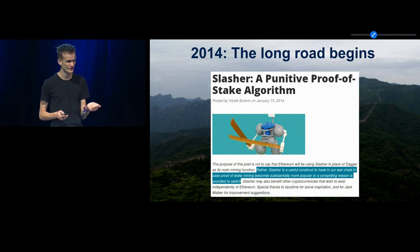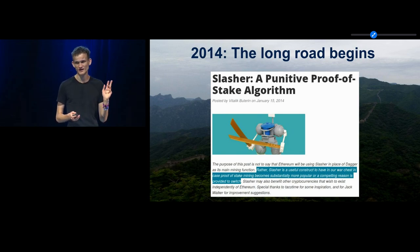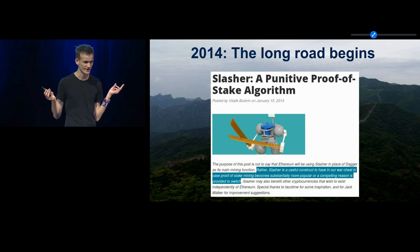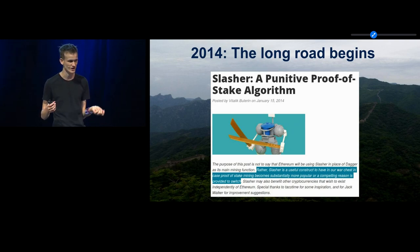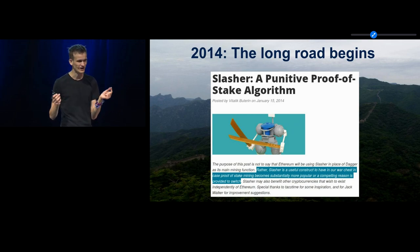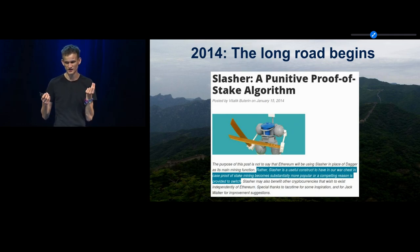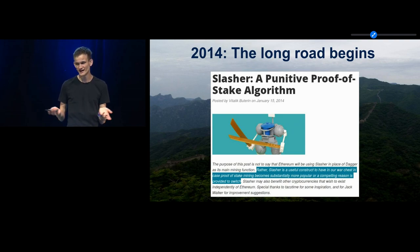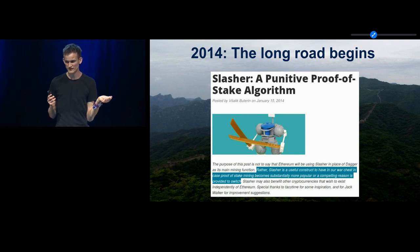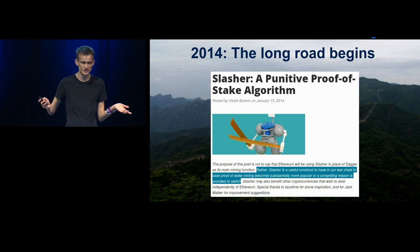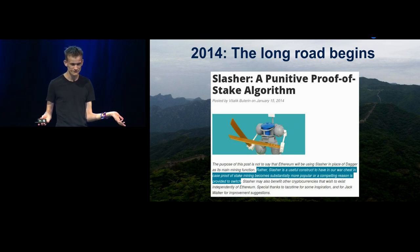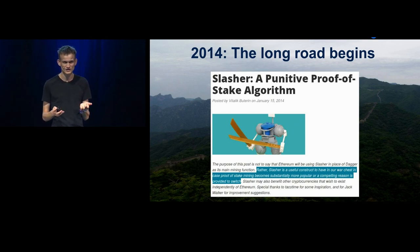The road to proof-of-stake actually started way back in 2014 with a blog post I published in January describing an algorithm called Slasher, which introduced the most basic concept in a lot of proof-of-stake algorithms: if you get caught doing something wrong, this can be proven and you can be penalized for it, and how this can be used to increase security. But at the time, I believed Slasher was a useful construct in our war chest in case proof-of-stake became more popular, but we were not doing that yet. It was not even clear that proof-of-stake was the direction we were going — but as we know now, that changed quite a lot.